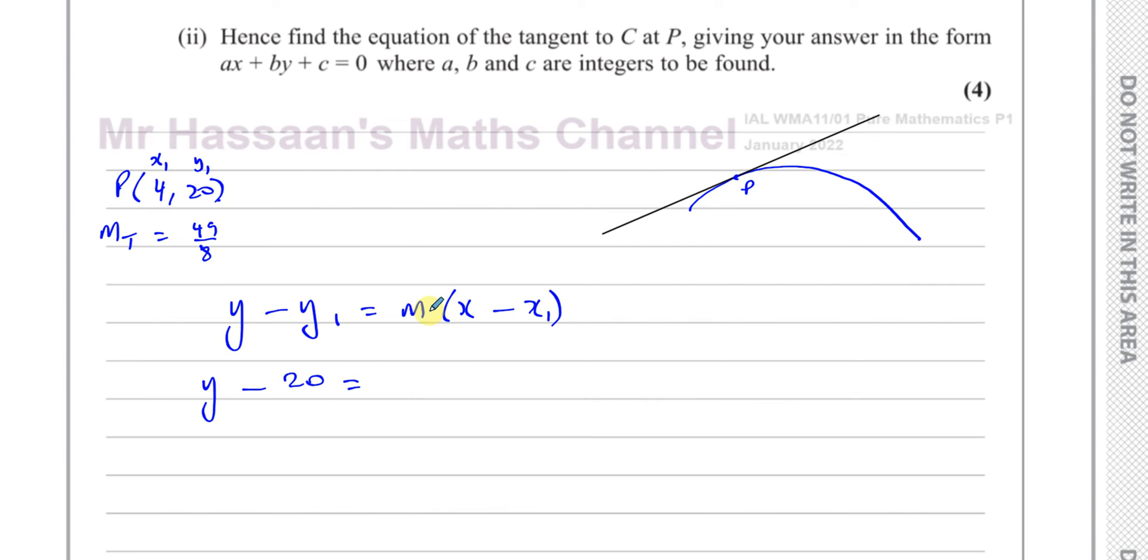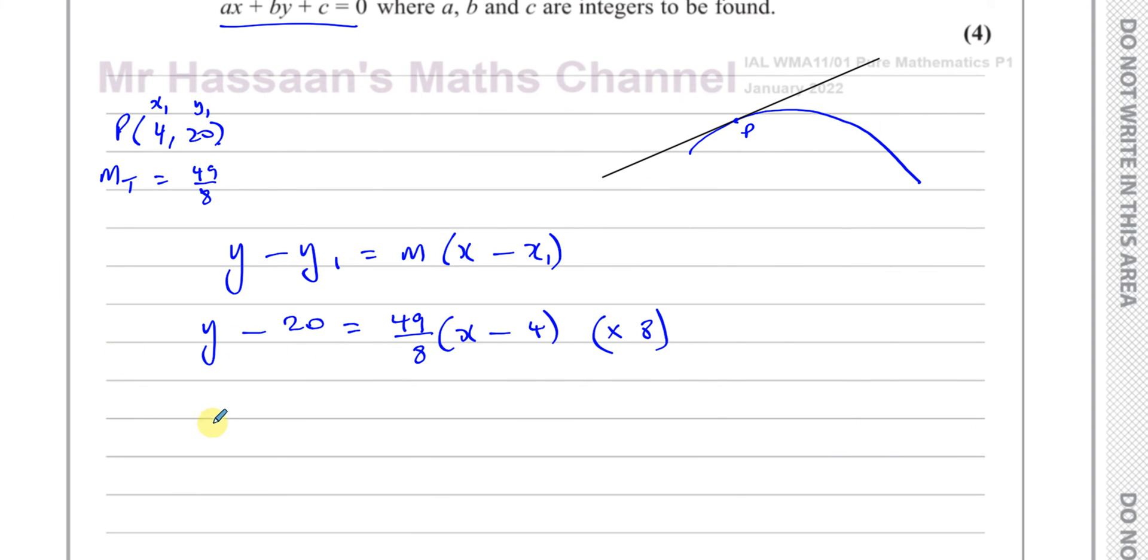So you have y minus y1, which is 20, equals m, which is the gradient, which is 49 over 8 times x minus x1, which is x-coordinate at that point. Now I want to express it in this form. So the first thing I'm going to do is multiply both sides by 8 to get rid of the fraction. So if I multiply this side by 8, I'll have 8y minus 160. This will get rid of the 8 here, so I'll have 49 times x minus 4.